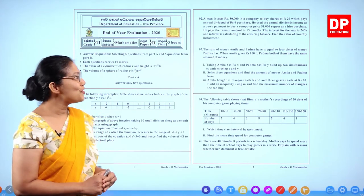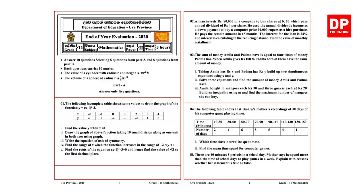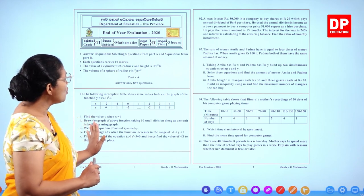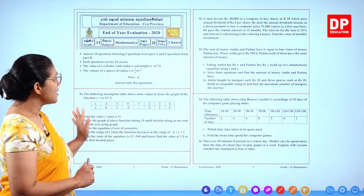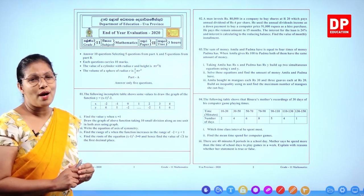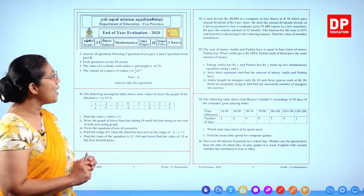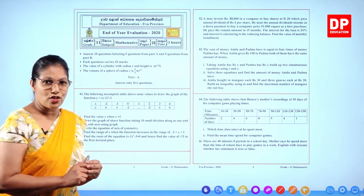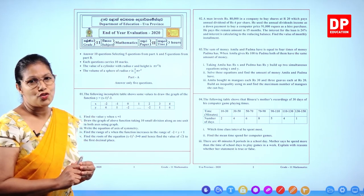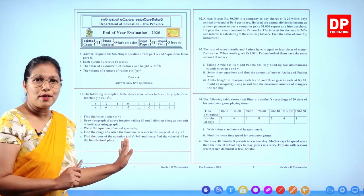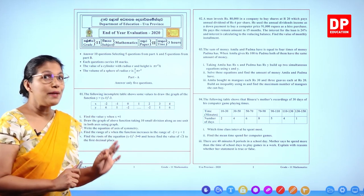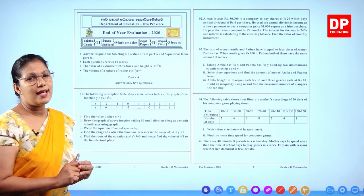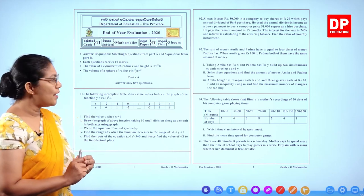Hello Oliver students. Today I'm going to do the end of year evaluation 2020 Department of Education Uwe Province paper. This is paper 2. You get 3 hours. There are two parts, part A and part B. In part A you get 6 questions but answer only 5. In part B you also get 6 questions, select only 5. Each question is worth 10 marks and you should take less than 18 minutes per question.